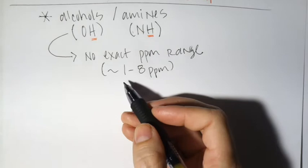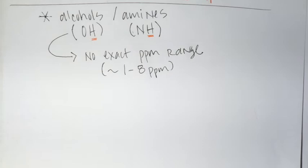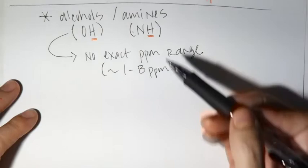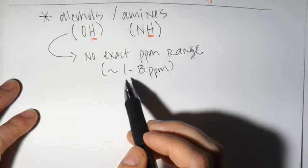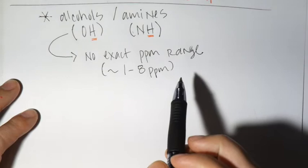The variability has to do with the amount of hydrogen bonding, concentration, temperature, humidity in the air, or what solvent it's dissolved in. All of this affects the PPM, so it's not reliable. You can literally take the same sample, NMR it on one day and then another day, and get a different PPM range for that proton.